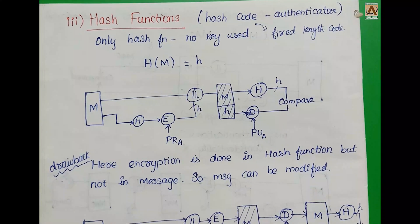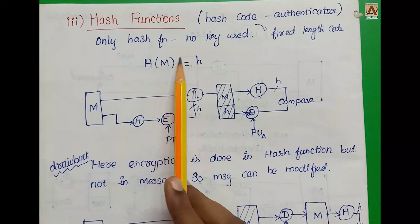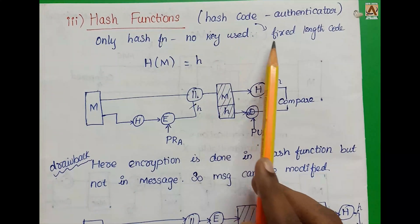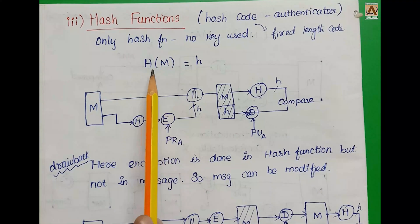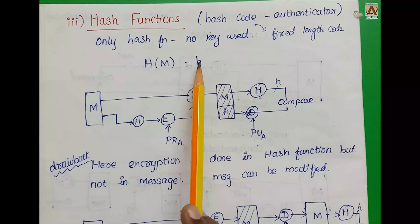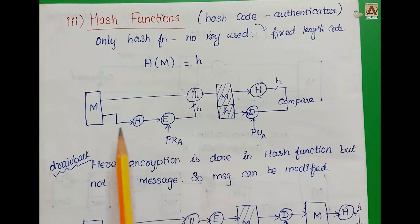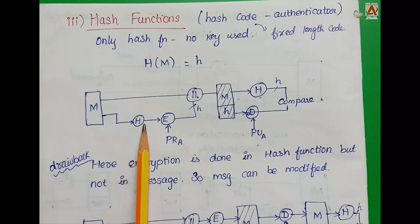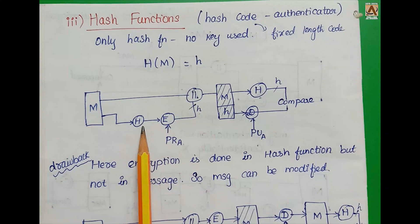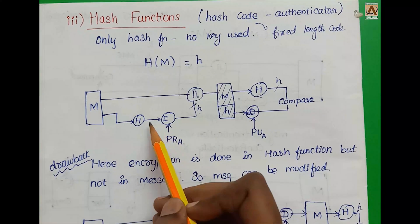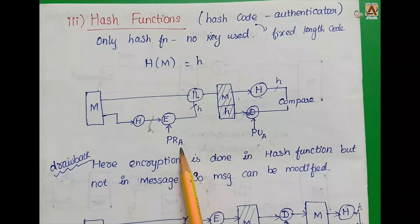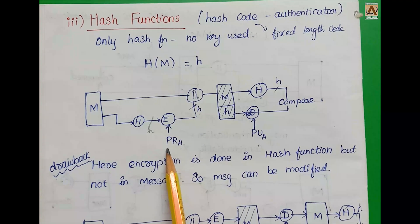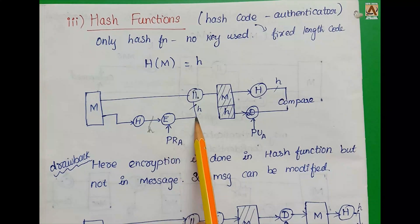The third type of authentication uses Hash Code. Only a hash function is used to produce a fixed-length hash code: H(M). Any algorithm can be used for the hash function. The hash code is then encrypted using the private key of the user to achieve authentication, producing an encrypted hash code.